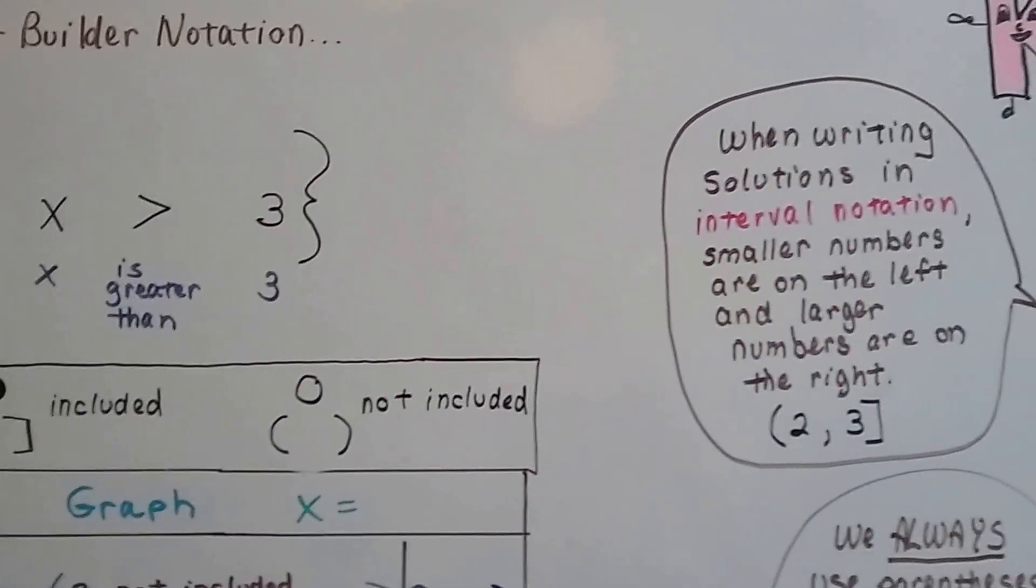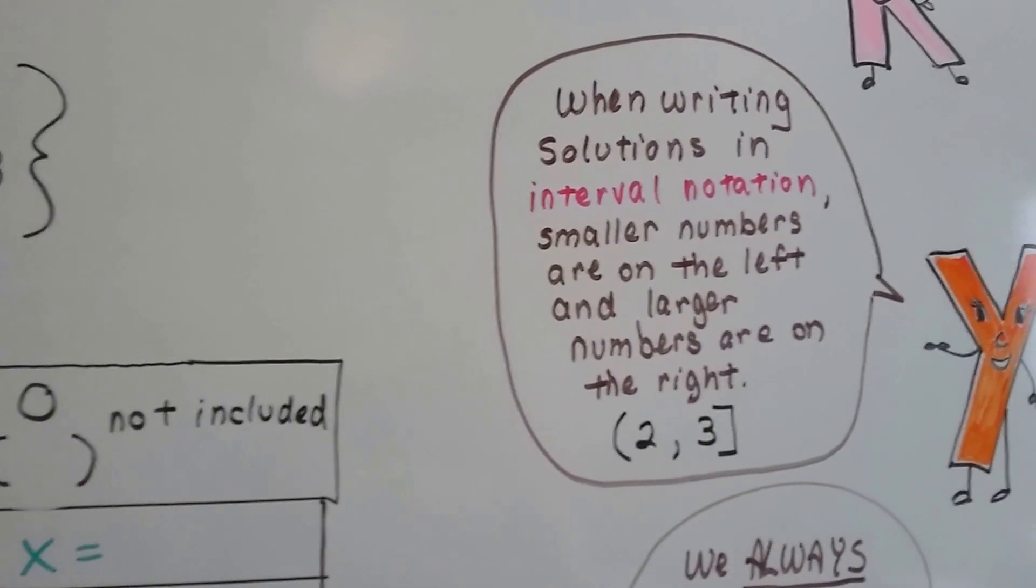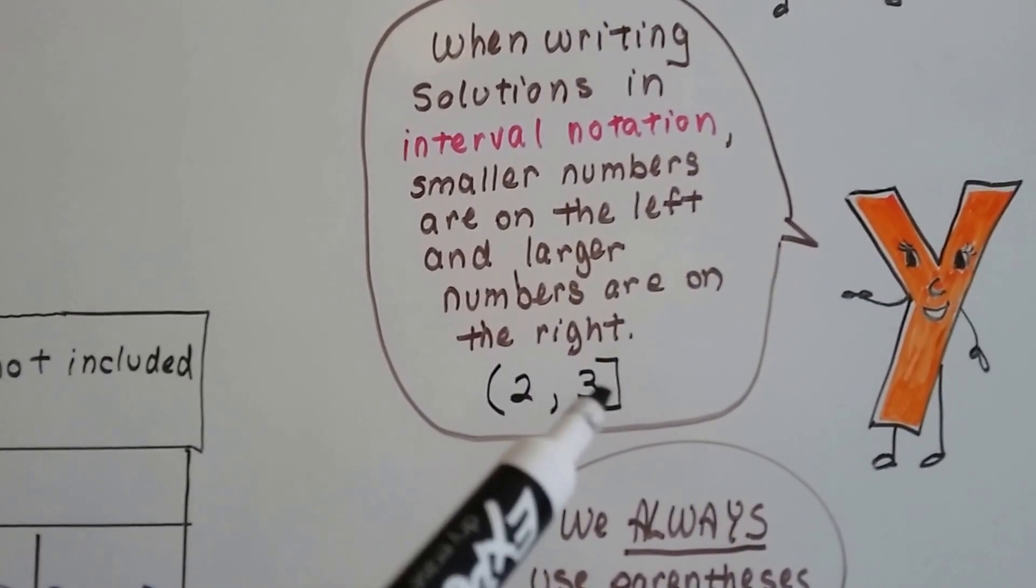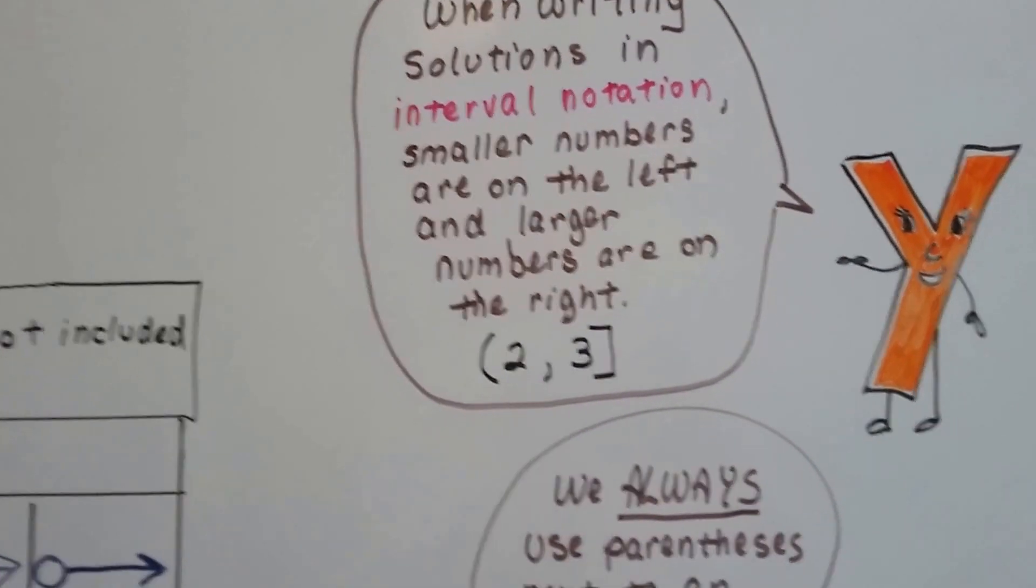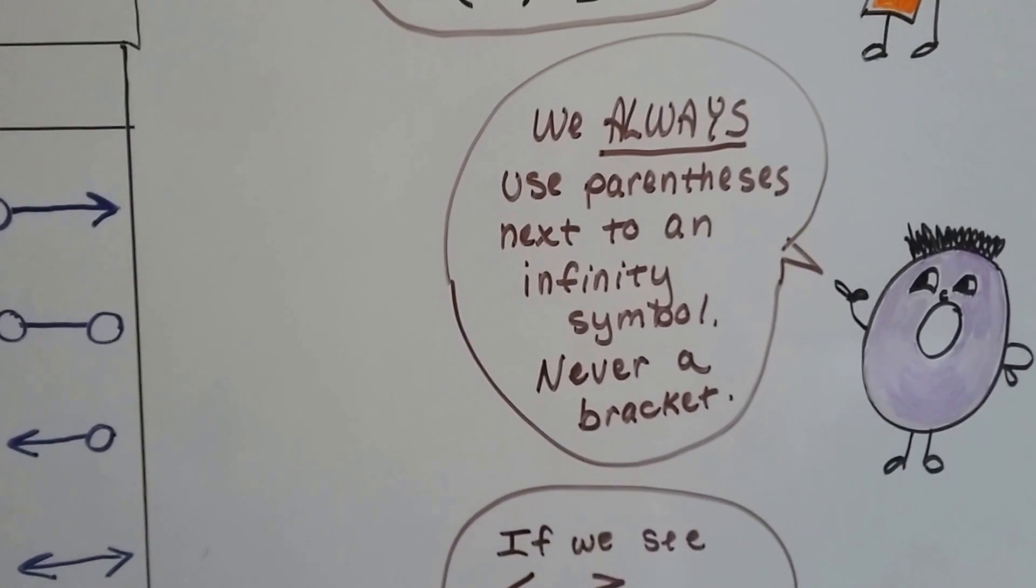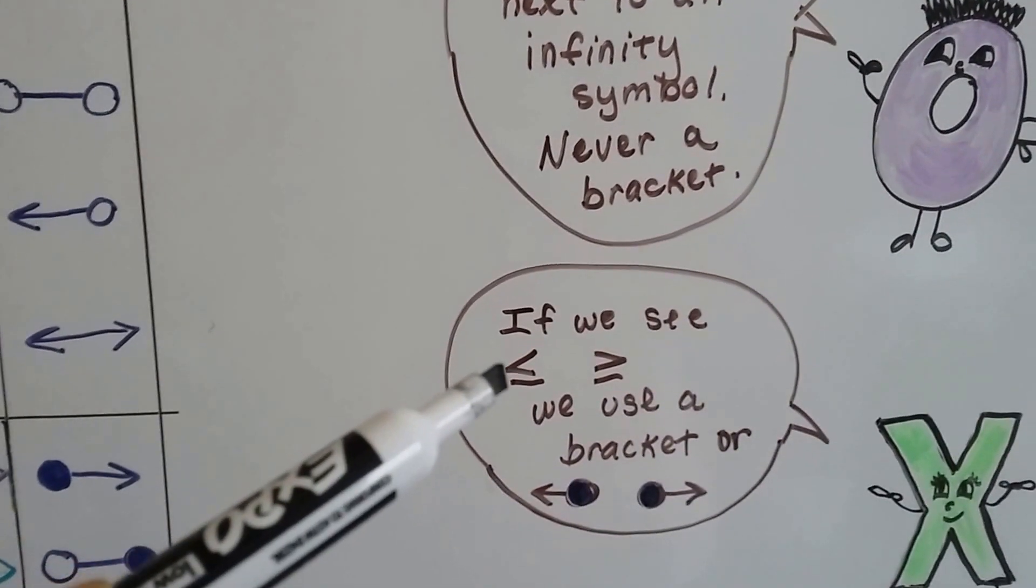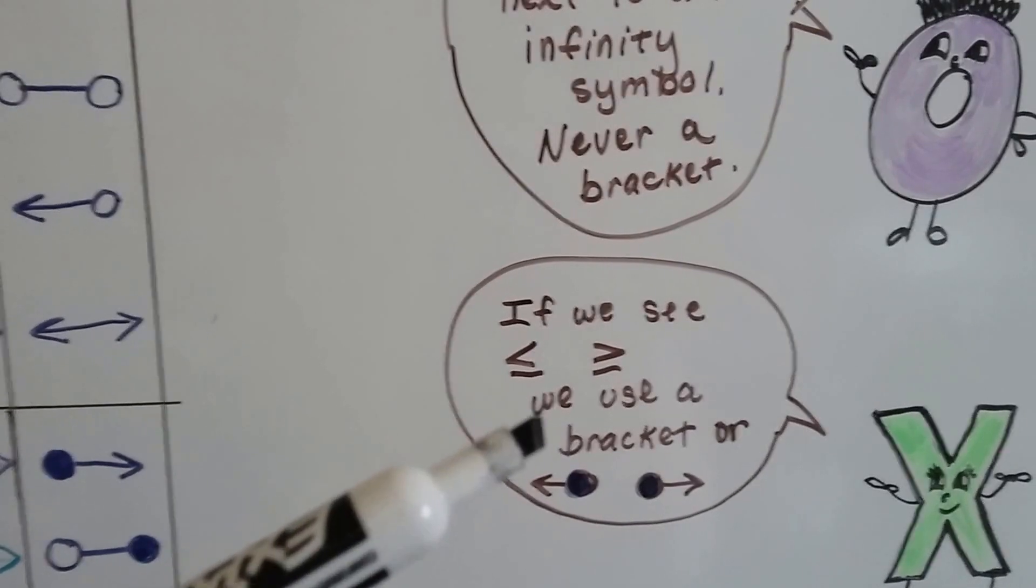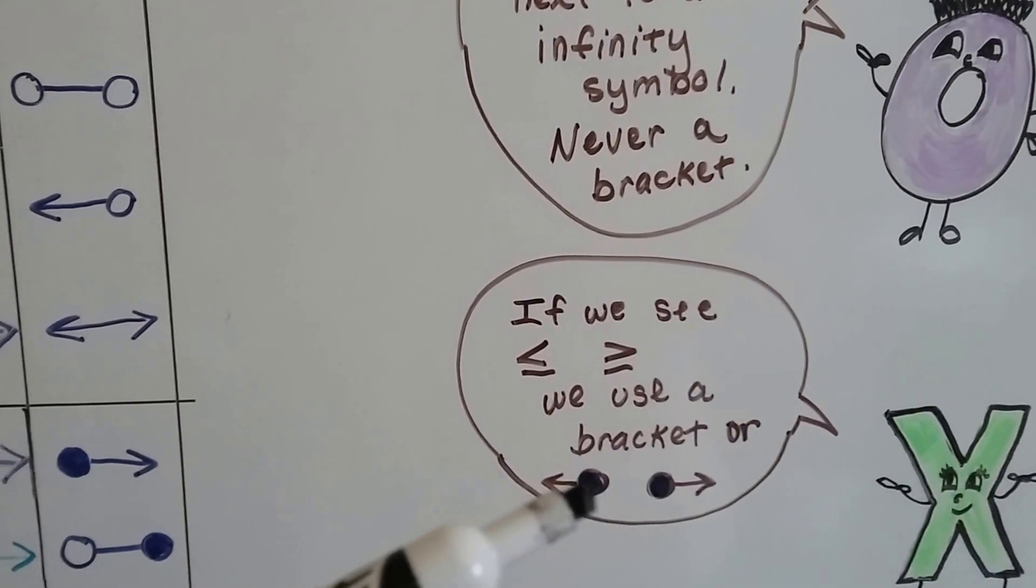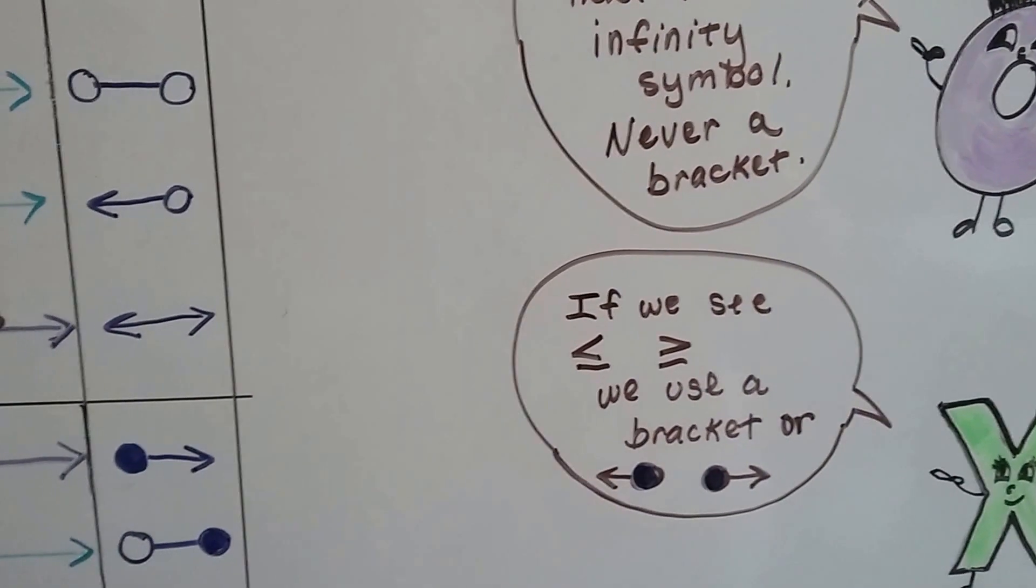We've got a couple rules. When writing solutions in interval notation, smaller numbers are on the left and the larger numbers are on the right. This would mean 2 is not included, but 3 is, and the solution is in between there. And remember, we always use parentheses next to an infinity symbol. We never use a bracket. And the minute you see an or equal to, we use a bracket or we use the filled-in dot to show that it's including it because it says it could be equal to it.